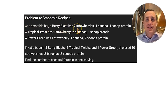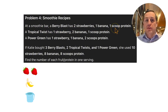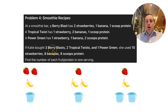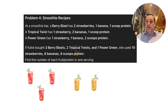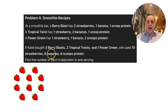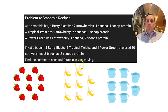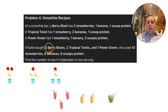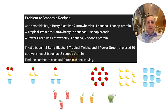A tropical twist has one strawberry, two bananas, and one scoop of protein. A power green has one strawberry, one banana, and two scoops of protein. Katie made three berry blasts, two tropical twists, and one power green, using 10 strawberries, eight bananas, and eight scoops of protein. Let X be strawberries per drink, Y be bananas per drink, and Z be scoops of protein per drink.